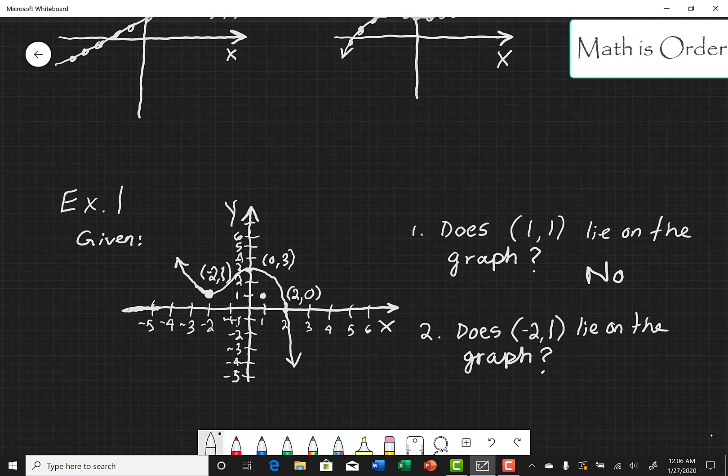Does the point (-2,1) lie on the graph? We can see clearly that (-2,1), which is right here, it does lie on the graph.